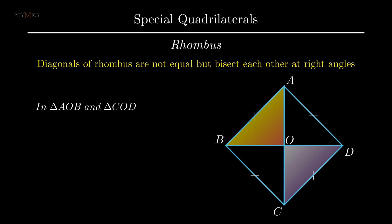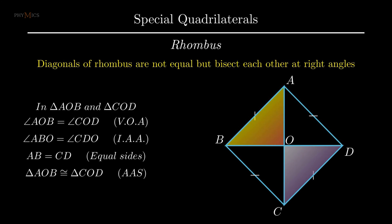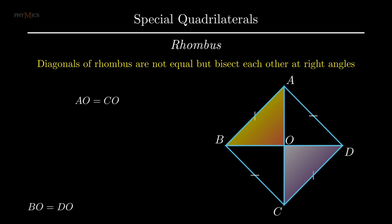To prove diagonals of a rhombus bisect each other, consider triangle AOB and triangle COD. As vertically opposite angles are equal, angle AOB equals angle COD. Since side AB is parallel to side CD, interior alternate angles are equal, thus angle ABO equals angle CDO. Side AB equals side CD as all sides of the rhombus are equal. Therefore by angle-angle-side rule, triangle AOB is congruent to triangle COD. By corresponding parts of congruent triangles, segment AO equals segment CO and segment BO equals segment DO.